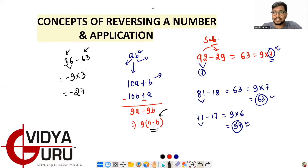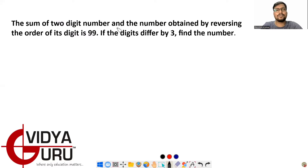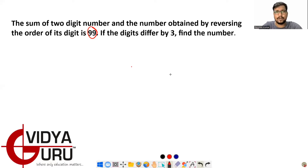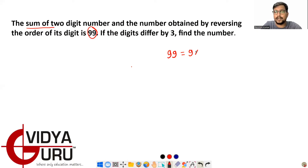Let's start with some questions. Question 1: The sum of a two-digit number and the number obtained by reversing the order of its digits is 99. Since the question mentions sum and gives 99, apply the addition concept. 99 must be a multiple of 11: 99 = 11 × 9, which means a + b = 9.